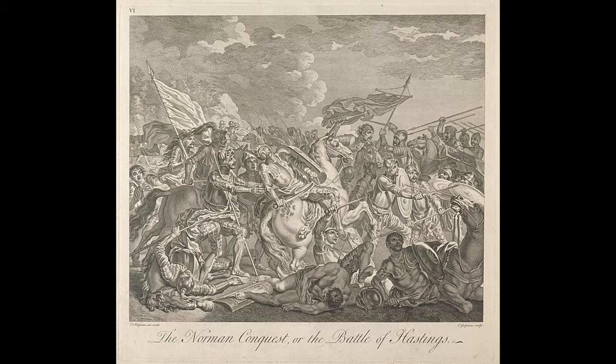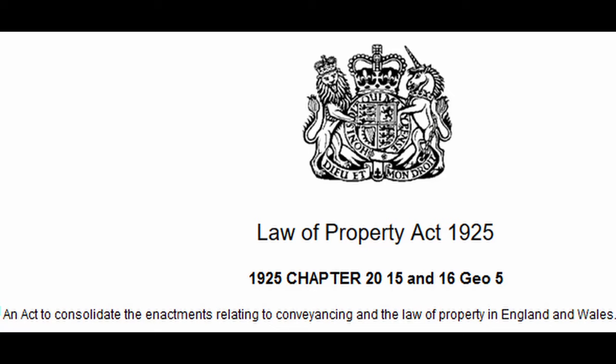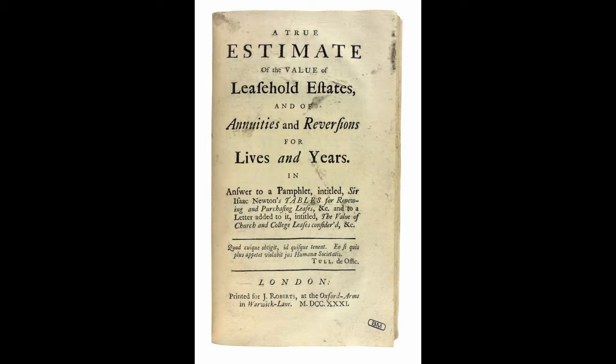Land law in Britain owes much to the feudal system that developed following the Norman Conquest. The ability to grant inferior interest in land and to take income from these, like rents, remains an important feature of the law. By the 16th century, the law of leases in England and Wales had evolved into a confusing approach. The most comprehensive attempt to tackle this in the modern era was the Law of Property Acts 1925, which limited the legal estate to either freehold or leasehold. While these remnants of the feudal system appear unfair, it has proved almost impossible to separate land law from its history.